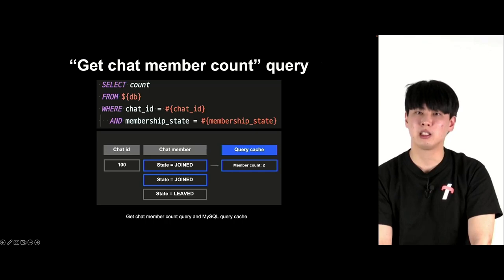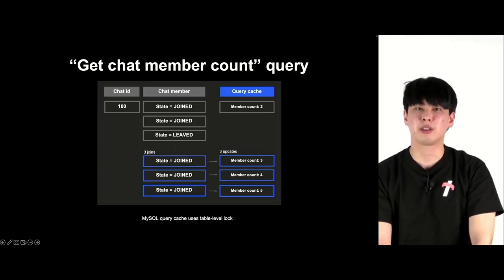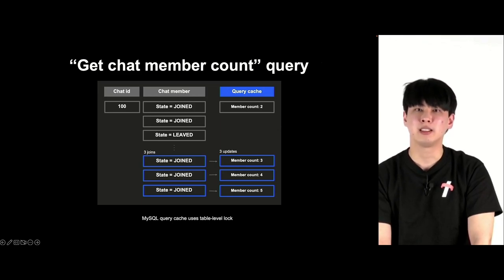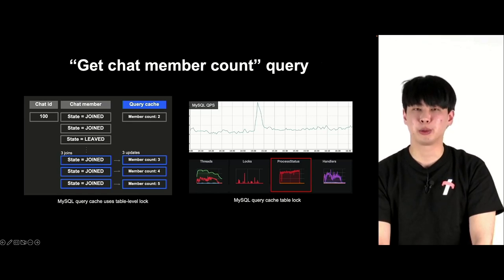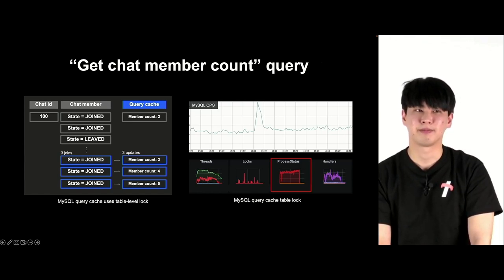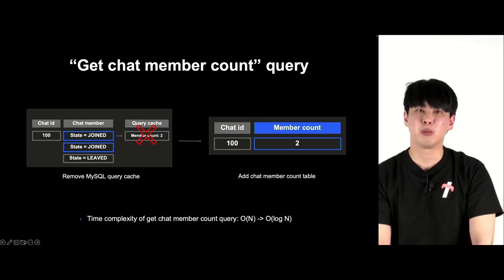In the get chat member count query, the number of members is tallied through a query with state equals joined. In the past, we did not have crowding for open chat joins and used the MySQL query cache to tally open chat members. But now with 2,000 and above join requests, when the MySQL query cache processes one join request, the new member value is renewed, it captures the table lock, recalculates the number of members and renews the query cache — this creates a huge load. When there's a join request spike, the renewal of the query cache leads to higher competition for the table lock. So we introduced a separate table to tally the number of participating members and eliminated the MySQL query cache to resolve this bottleneck.